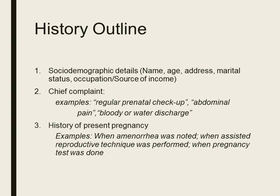Here is the suggested outline for obtaining a good history. First, ask for sociodemographic details such as her name, age, where she lives, her marital status, and occupation. Next, ask about her chief complaint. Usually these patients come for regular prenatal checkups, but some patients come with complaints of abdominal pain or bloody or watery discharge, which may signify that she might be in labor.